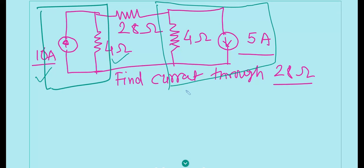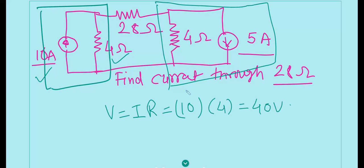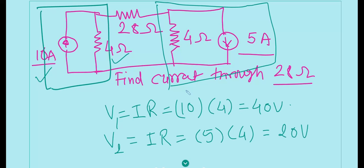In the first combination we have a 10-ampere current and a 4-ohm resistor, so voltage V1 = I × R = 10 × 4 = 40 volts. On the right-hand side we have V2: the current is 5 amperes and the resistance is 4 ohms, so V2 = 5 × 4 = 20 volts.